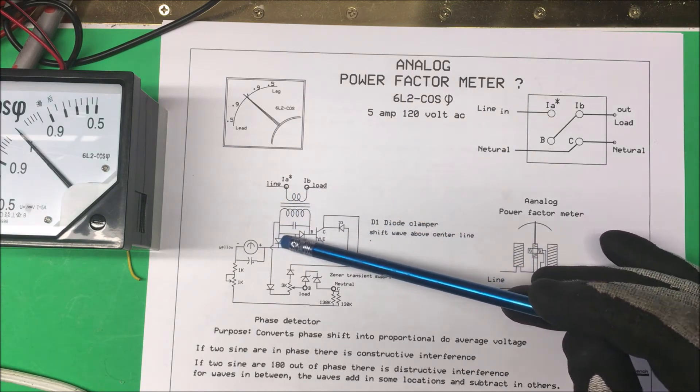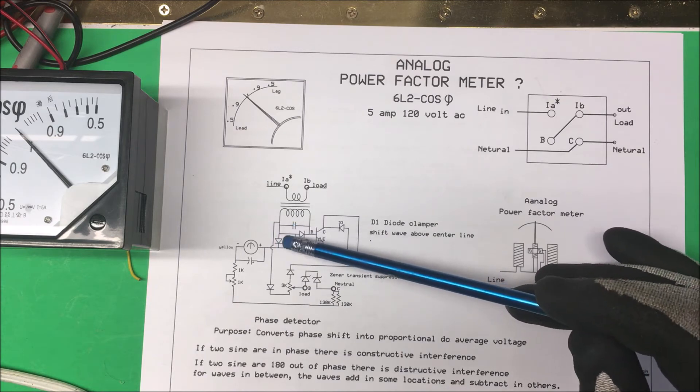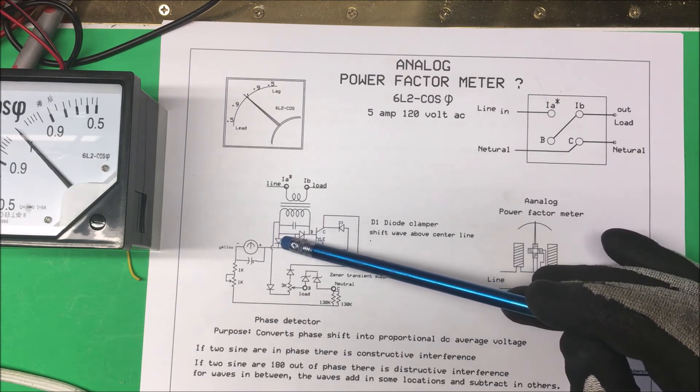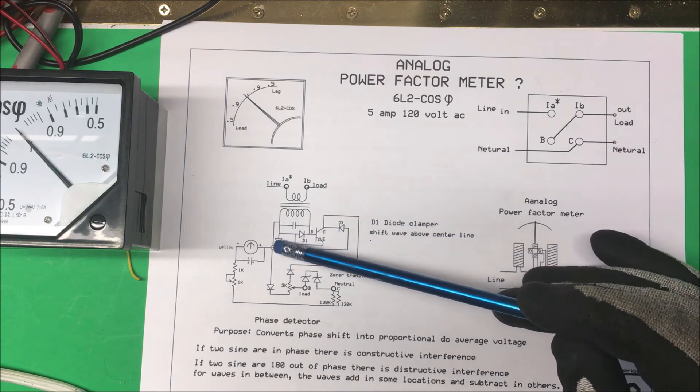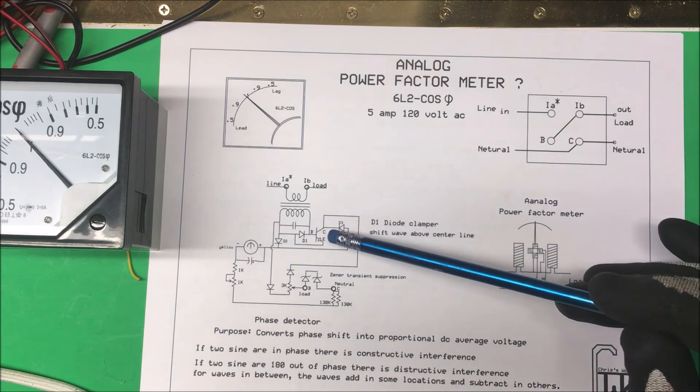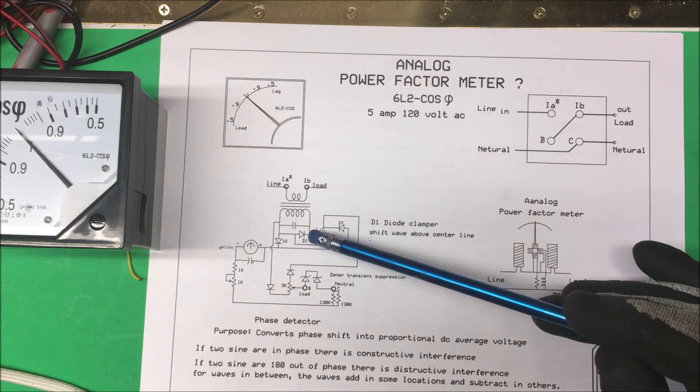It mixes with the current coming down here and it'll either add or subtract. The difference between the phases is the only thing going to get through here.